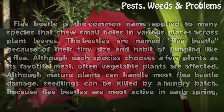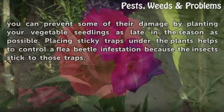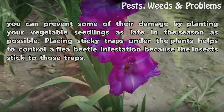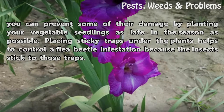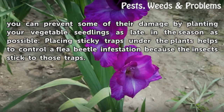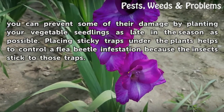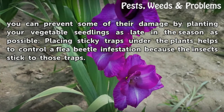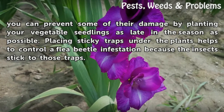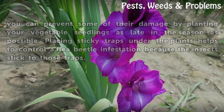Because flea beetles are most active in early spring, you can prevent some of their damage by planting your vegetable seedlings as late in the season as possible. Placing sticky traps under the plants helps to control a flea beetle infestation because the insects stick to those traps.